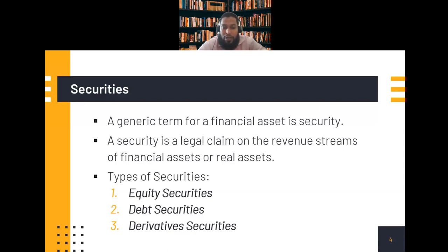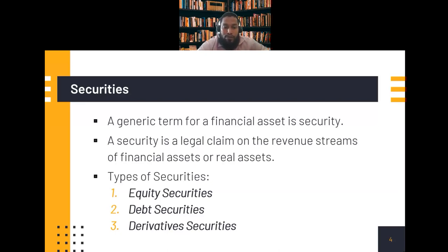Derivative securities are instruments whose values are derived from something else — that is why they are called derivatives. Examples include futures, forwards, options, and swaps. These securities are basically used to mitigate risk, though in conventional markets they are sometimes used to speculate. For example, people buy options to mitigate the risk of loss.